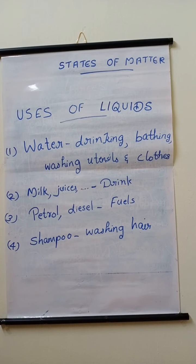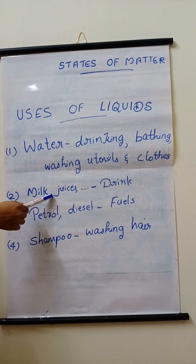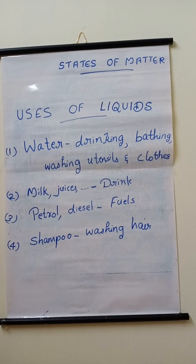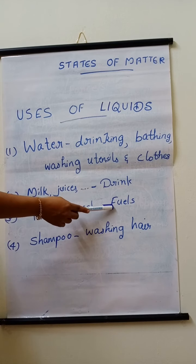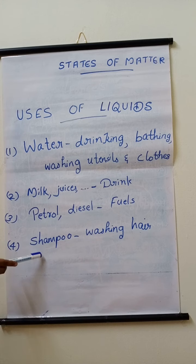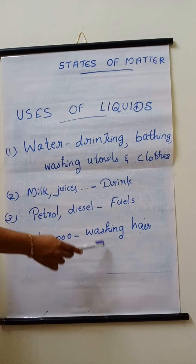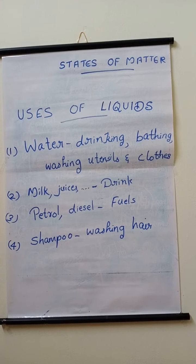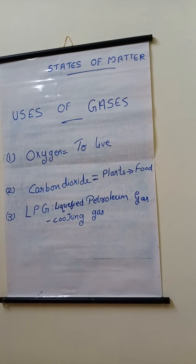Next one is uses of liquids. Water is used for drinking, bathing and washing utensils and clothes. We drink milk, juices and coconut water. Milk, juices and coconut water are examples for liquids. Petrol and diesel are liquids. They are used as fuels in vehicles. Shampoo is an example for liquid. It is used for washing hair.